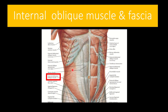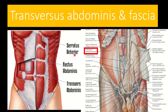We can see here the internal oblique muscle. The fiber direction is somewhat oblique. This is the internal oblique muscle, and when it runs to the midline it also converges into a fibrous structure called the internal oblique fascia.